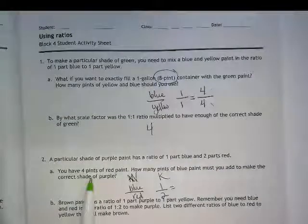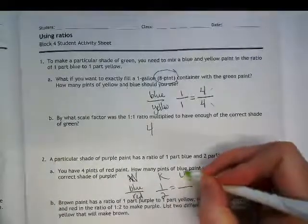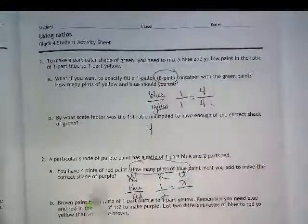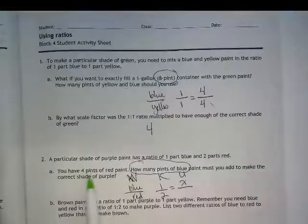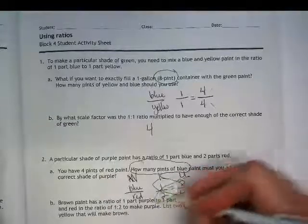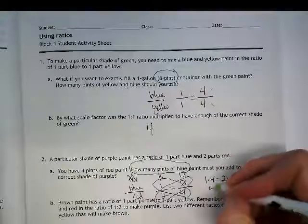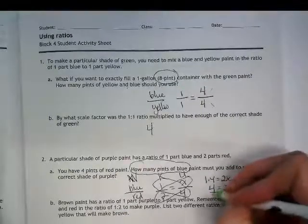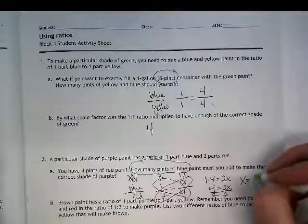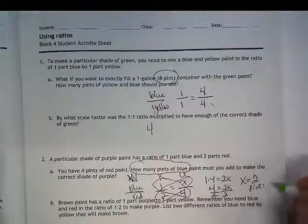That would be where we're getting to our unknown, because it's asking here how many pints of blue. That means this is going to be our unknown, and we know that we have four here. So again, you could probably just look at this and figure it out, but we're going to cross multiply. 1 times 4 is equal to 2x. 4 equals 2x. If we divide by 2, we end up with x equals 2 pints of blue.